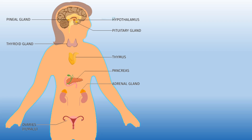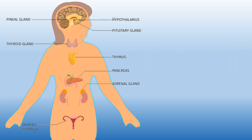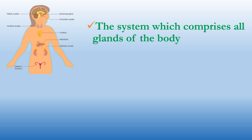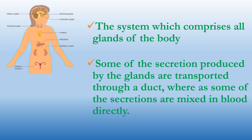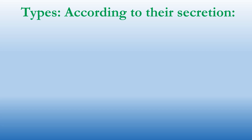Hello friends, welcome back to my channel. I'm Bismitha. Today we're going to start the glandular system. The system which comprises all glands of the body is known as the glandular system. Some of the secretions produced by the glands are transported through a duct, while some secretions are mixed into the blood directly.